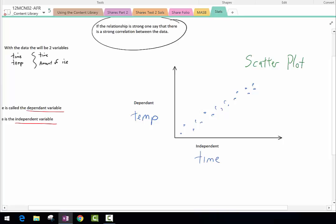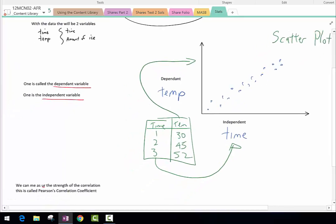When you actually get that information, you would get it in a table. One would be time, one would be temp: one, two, three, it could be 30, 45, 52, something like that. Notice that you have the time, which is the independent variable, which goes on the x-axis. And the temperature, which is the dependent variable, goes on the y-axis. So one relates to the other.